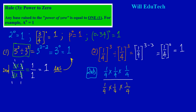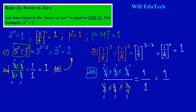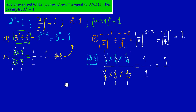Cancelling each one upon four in the numerator with each one upon four in the denominator, we're left with one times one times one on top and one times one times one on the bottom — one upon one — which equals one. Again confirming that a base raised to the power of zero equals one.